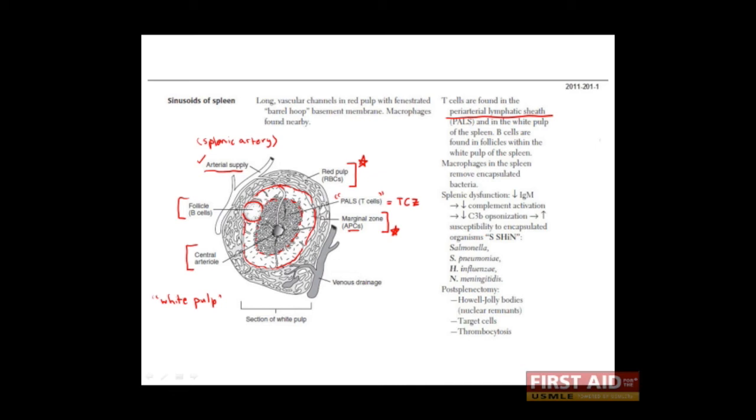The spleen serves as a site of activation for B and T cells, of course. But it's also a very good place where macrophages can sample what's floating around in the blood. This is, of course, because the blood is being circulated and filtered through the spleen via the splenic artery.